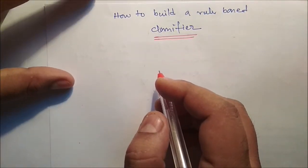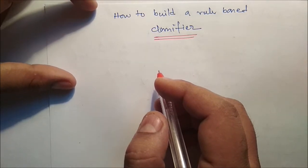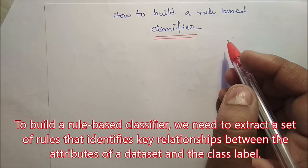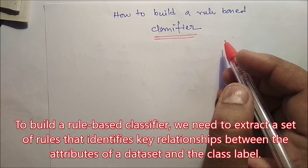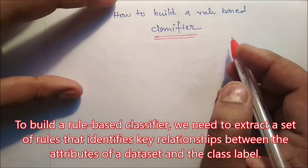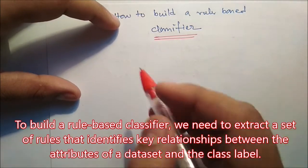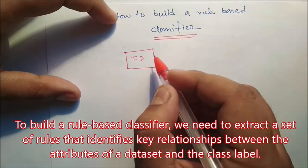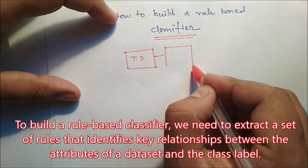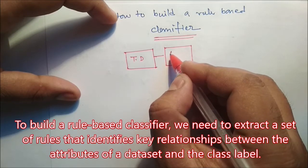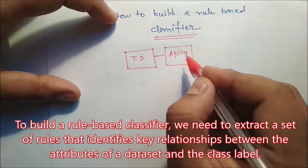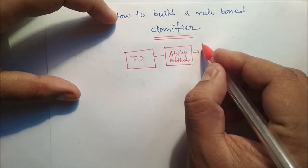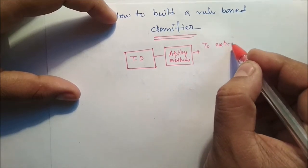Welcome back. This is our second video on rule-based classifiers. Here we will talk about how to build a rule-based classifier. To build a rule-based classifier, we need to extract a set of rules that identifies key relationships between the attributes of a dataset and the class label. There must be training data, and from the training data we apply some methods to extract the rules.